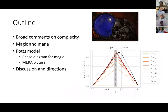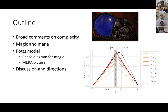Here's the outline. I'm going to start with some broad comments on complexity, just to let you know where I was coming from when this project started. Then I'll define magic and mana for you, because they're probably things you're not familiar with, at least those of you in the high energy community. And then I'll just tell you the main result, which is that we compute the mana — a measure of magic — for a 1D spin model called the Potts model.